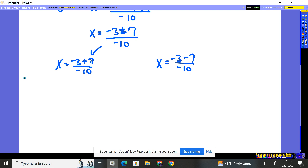Negative 3 plus 7, that's positive 4. Positive 4 divided by negative 10 is negative 4 tenths. So negative 0.4 is one value.